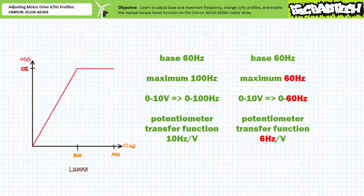If one reduced maximum frequency also to 60 hertz, this doesn't really change the performance all that much besides limiting maximum speed. As previously, from zero to base frequency, applied voltage would be linearly proportional. Given base frequency happens to be maximum frequency, applied voltage would cease to increase as would frequency. Really the only difference is that the external speed potentiometer's zero to 10 volt analog voltage input would now be automatically scaled to represent only the zero to 60 hertz range.